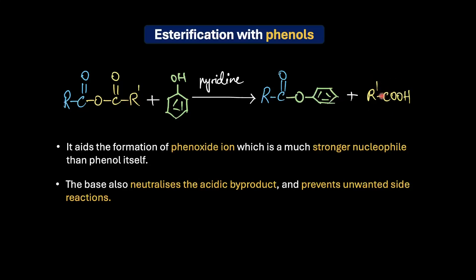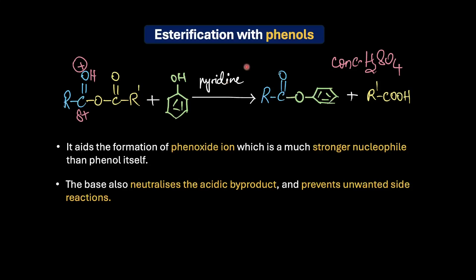Carboxylic acid can result in unwanted side reactions, especially if you have any acid-sensitive groups in a reactant. And as the acid builds up, it can cause hydrolysis of the very ester product we are trying to make. That is why we almost always carry out this reaction in the presence of a base. However, we can also carry it out under acidic conditions using concentrated sulfuric acid, which protonates the carbonyl oxygen of the acid anhydride, making the carbonyl carbon more electrophilic and susceptible to attack by even a weak nucleophile like phenol. In general, though, basic conditions are preferred because they give higher and cleaner yields, and concentrated sulfuric acid can cause side reactions like sulfonation and dehydration.